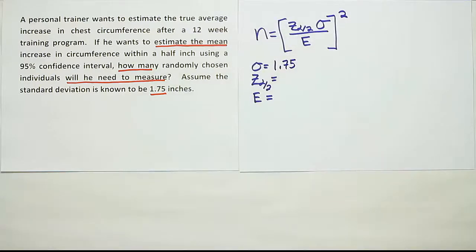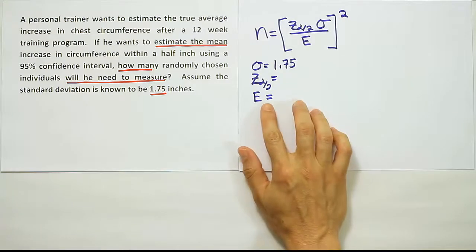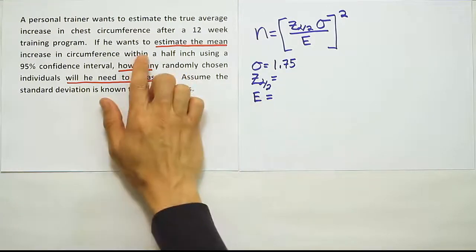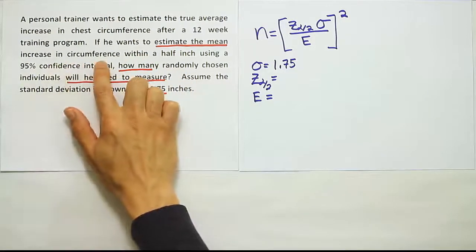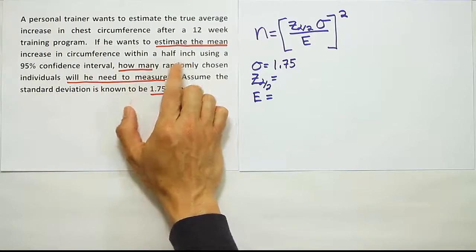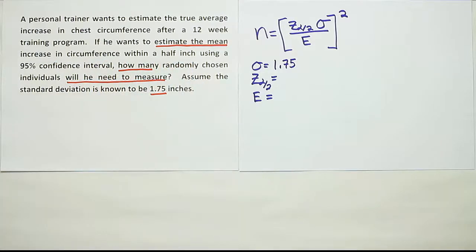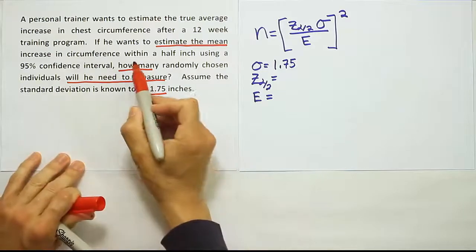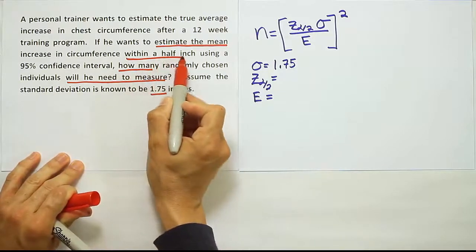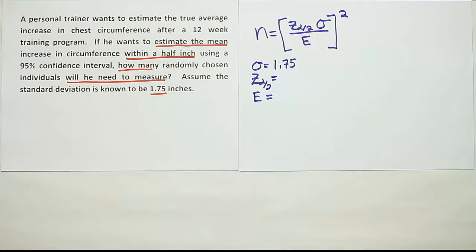Now the margin of error is the next easiest one to find. It says we want to estimate the mean increase in circumference within a half inch. This phrase "within" is usually the key phrase they use when talking about margin of error.